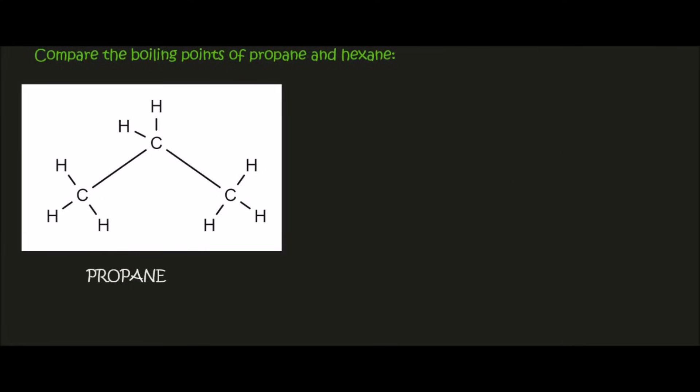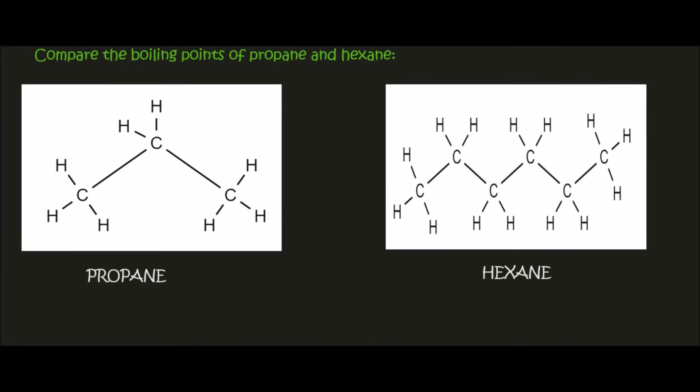The next one we're going to look at is hexane, which has six carbons. Now when you're comparing the boiling points we're not going to try to break them apart from each other. Remember that if you have a bottle that contains propane, now if you want to boil this, that's going to say propane.